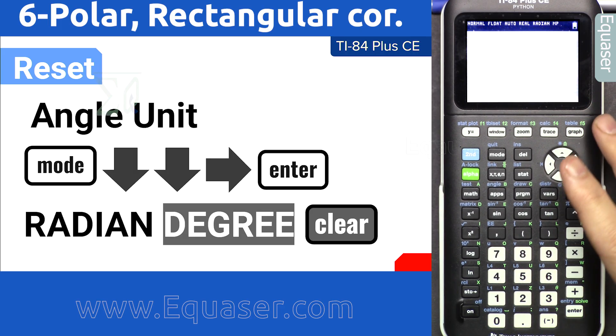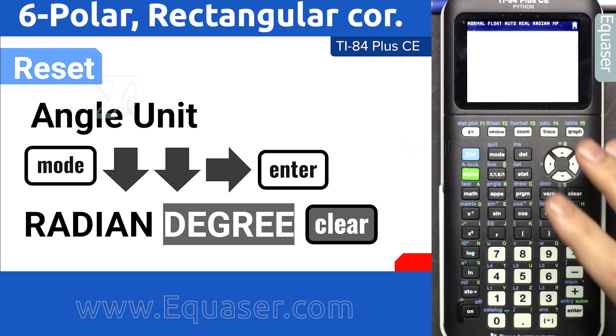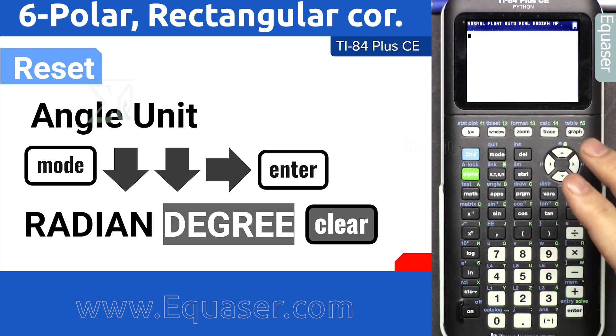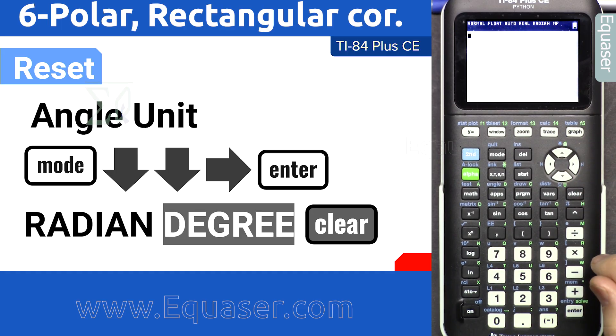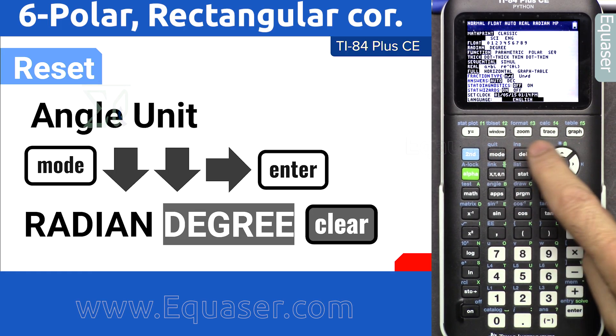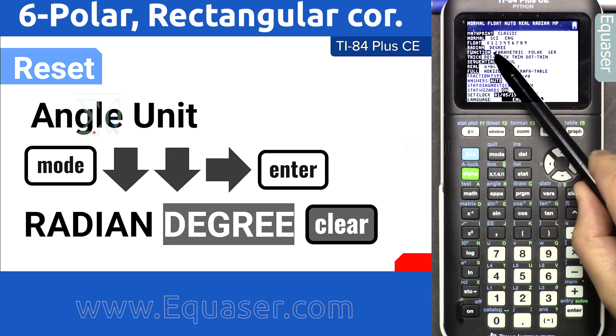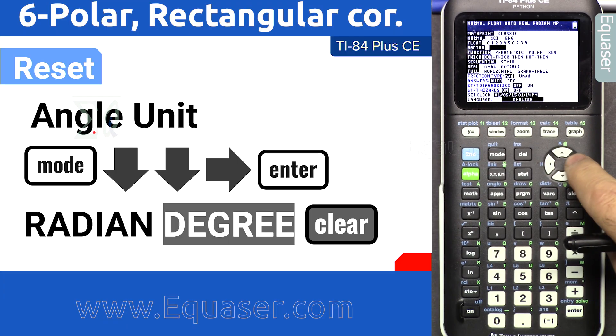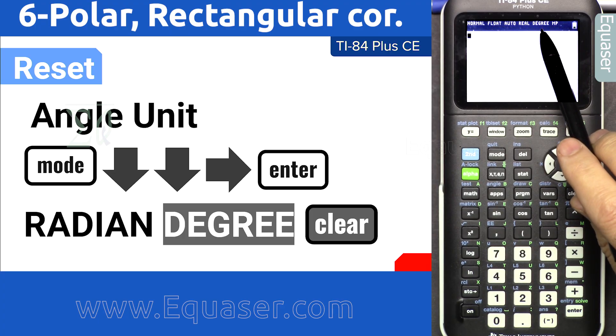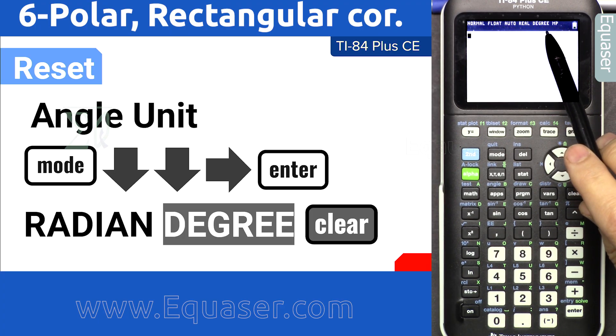First, let's change the angle unit because most of the time you will work with degree unless you want radian. So press mode, go once and twice until you see radian is blinking. This is degree. Press enter and clear. Now you see degree on the screen, but we can change it the same way that I have just shown.